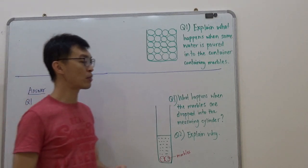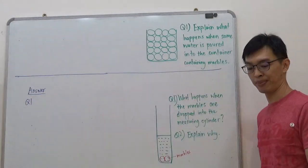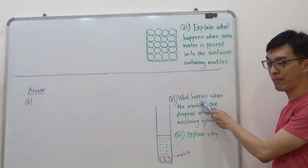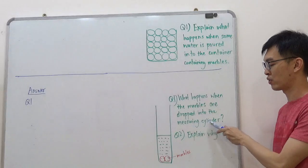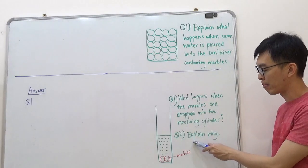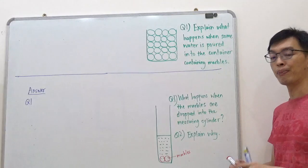How to explain this in words? Here comes the question. What happens when the marbles are dropped into the measuring cylinder? Question two, explain why.